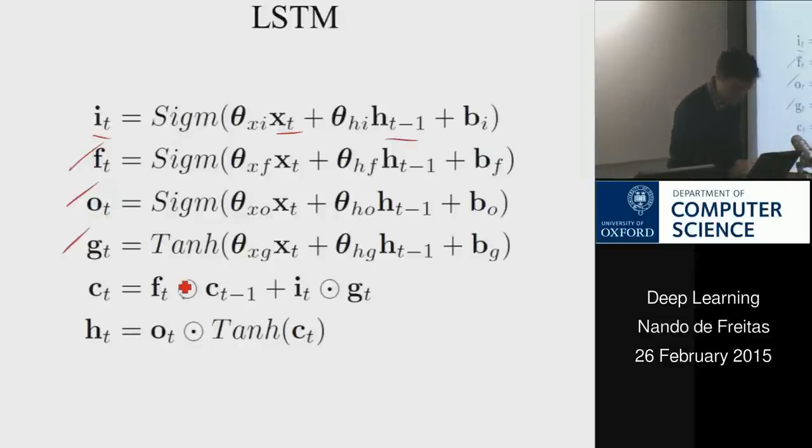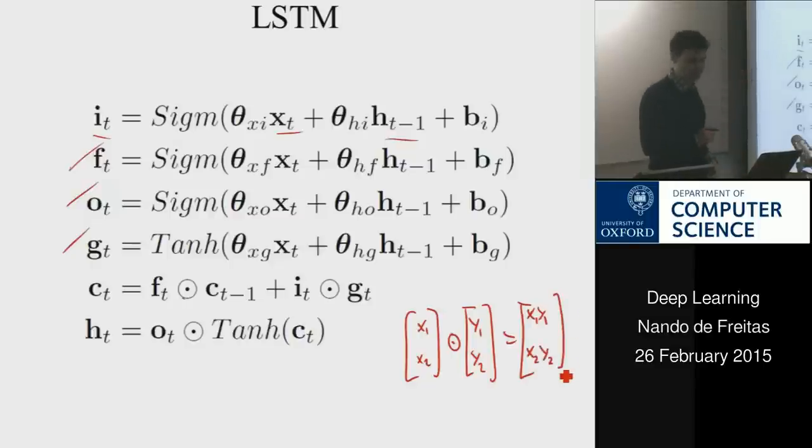And then you do this point-wise multiplication. So that's scalar multiplication. So if you have x1, x2, multiplied by y1, y2, by this I mean you multiply each entry one times the other, entry-wise multiplication. And then that's it.